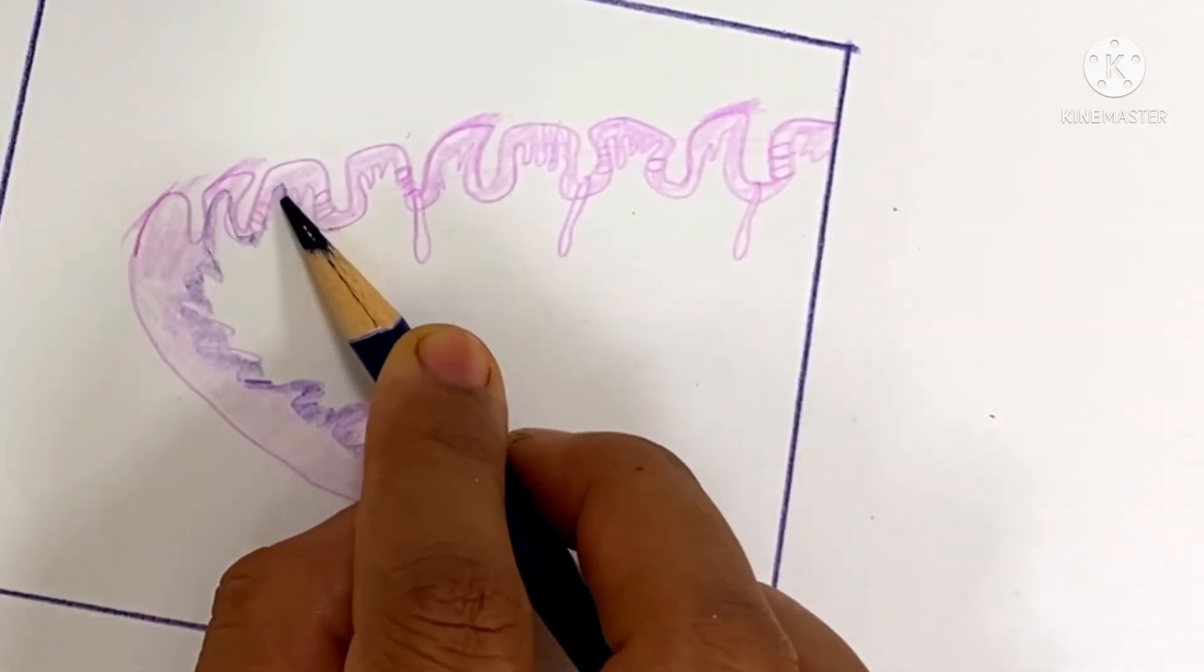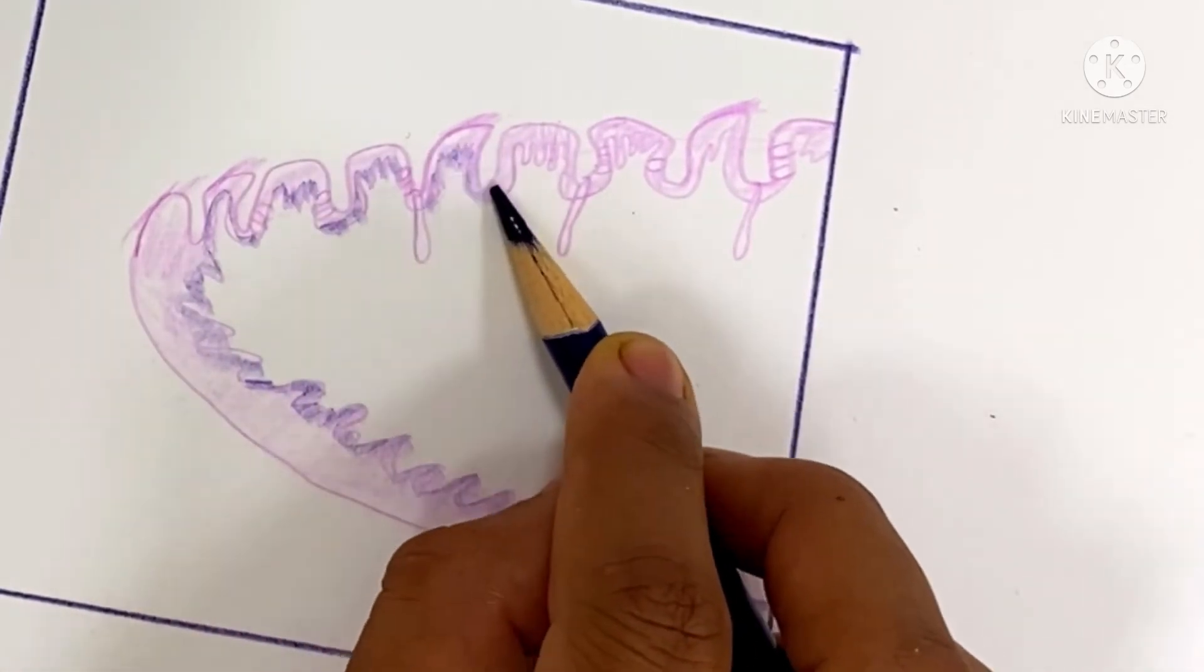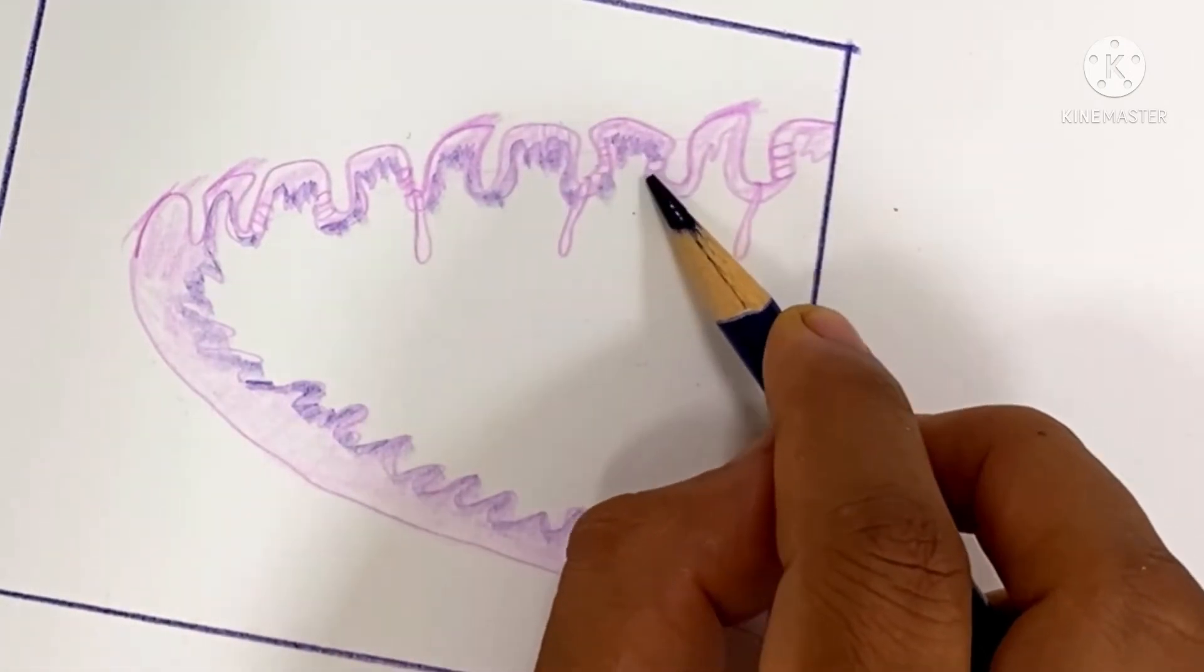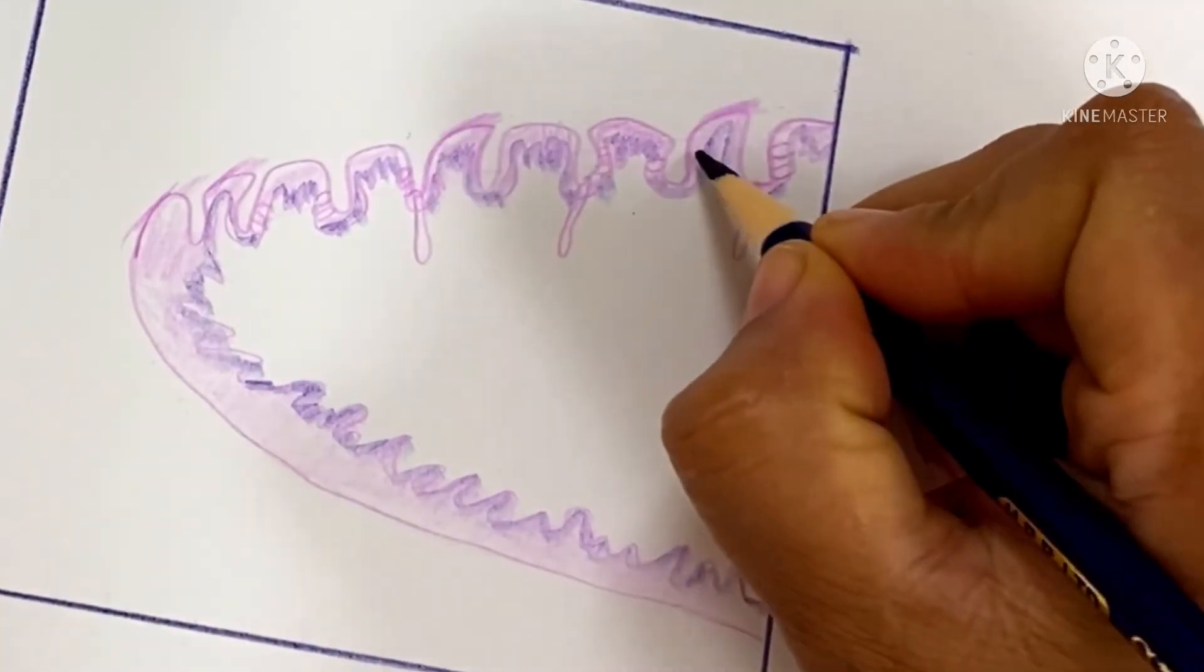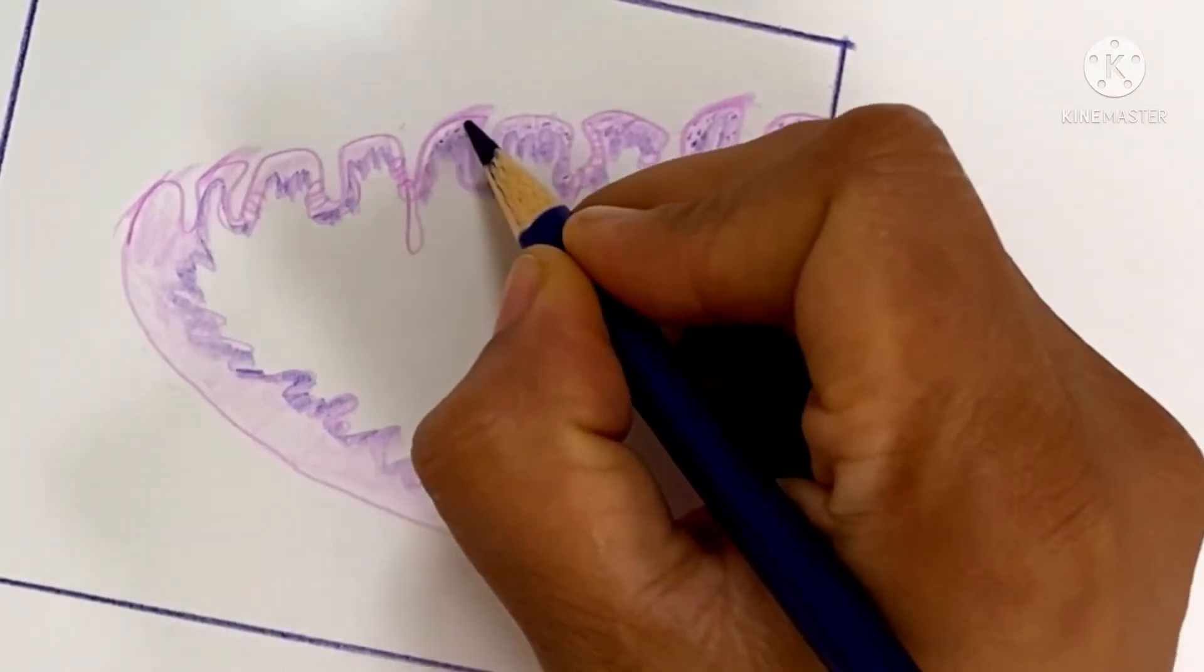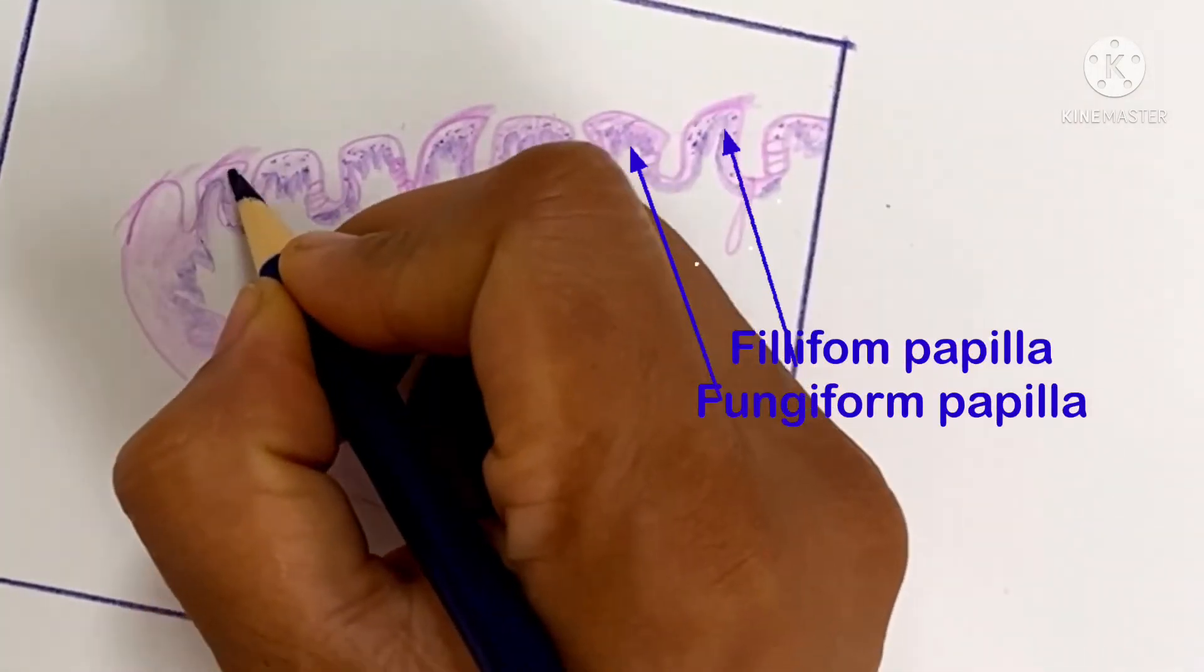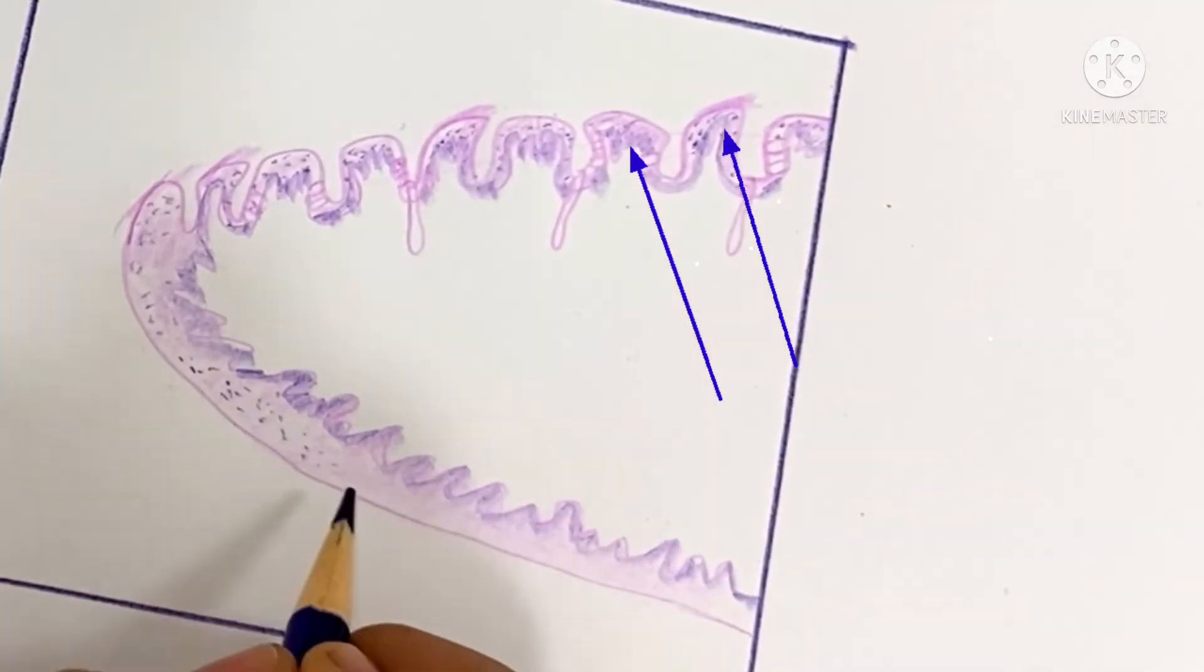Near the basement membrane, the stratified epithelium contains cuboidal or columnar epithelium. The nuclei of these cells give a dark color. When the layers move upward, the superficial cells become flat with flat nuclei.